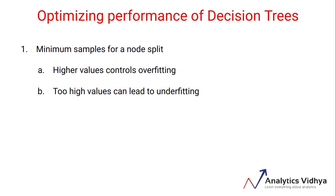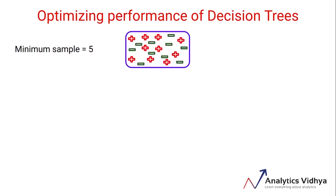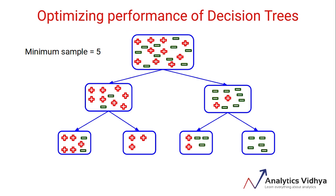The second way is to set the minimum samples for a terminal node. A node will be considered as a terminal node if it has specified minimum number of samples. Let me explain this using an example. Let's say we have set the minimum samples for a terminal node as 5, as you can see in this case. And this is how the tree looks like after splits.